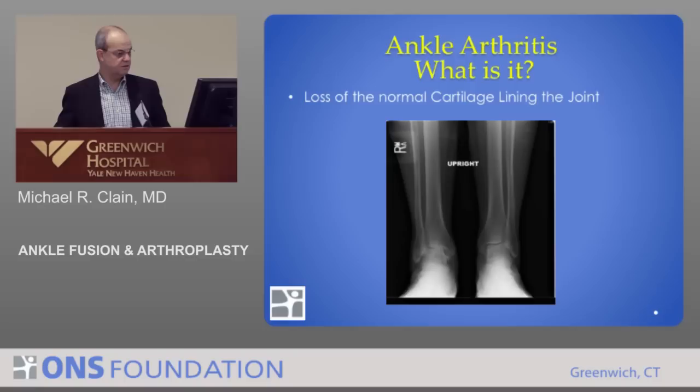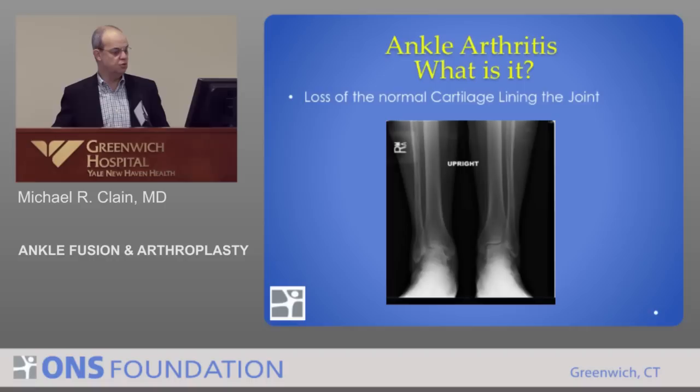What is ankle arthritis? If you look at this standing X-ray, you can see a nice smooth symmetric joint on one side, and on this side the individual has a little cartilage but it's worn out on the inside. That doesn't tell you how much pain the patient has — I saw an 80-something-year-old whose ankle looked absolutely horrendous, and he said he felt fine; his girlfriend sent him in.